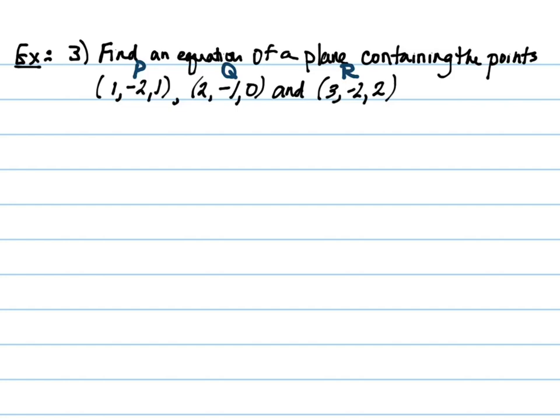Find an equation of a plane containing the points (1, -2, 1), (-2, 1, 0), and (3, -2, 2). And just so that we have a reference point, a name for these points, I'm going to call them P, Q, and R. You can do that if you'd like; if it doesn't matter to you, that's fine too.